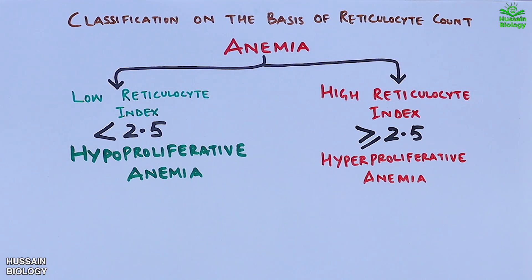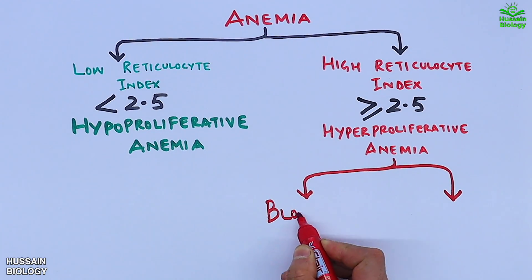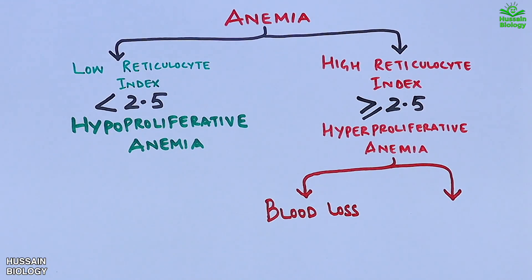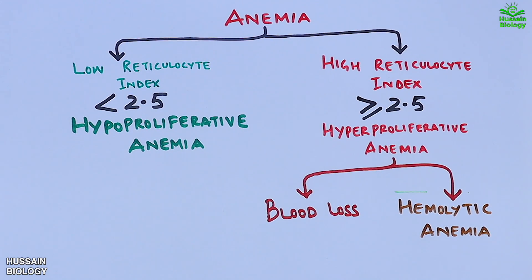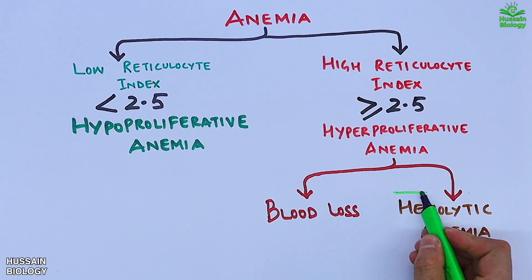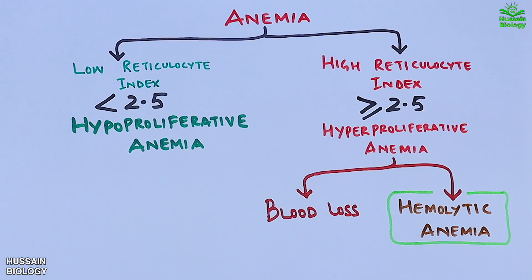Hyperproliferative anemia has two types: anemia due to blood loss, and hemolytic anemia. It must be noted that hemolytic anemia is one of the important types of anemia.